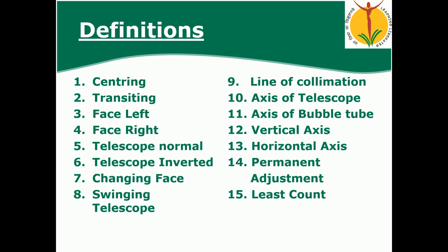Next is transiting. The definition of transiting is: rotating the telescope about the horizontal axis in a vertical plane by 180 degrees. That process is called transiting.